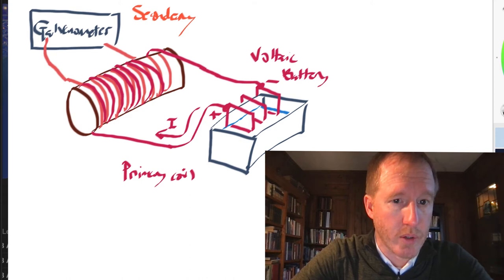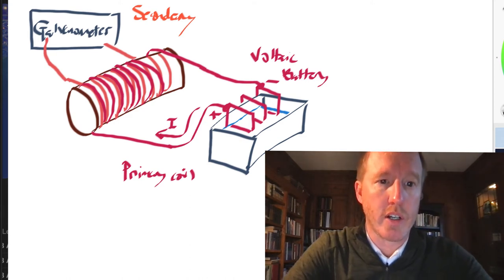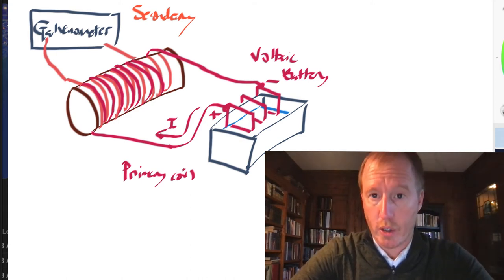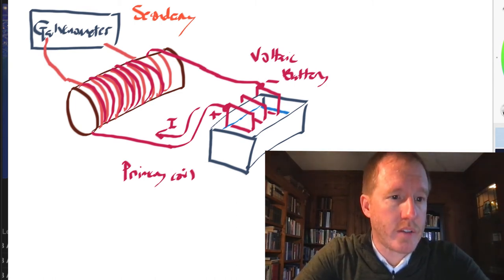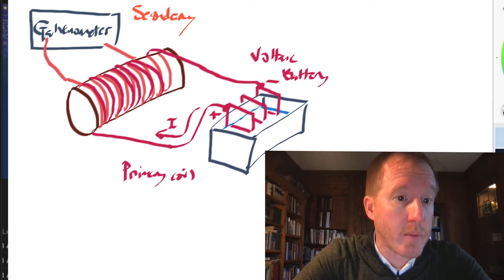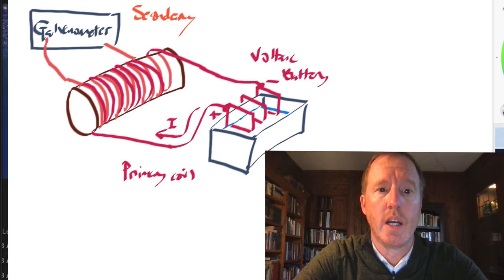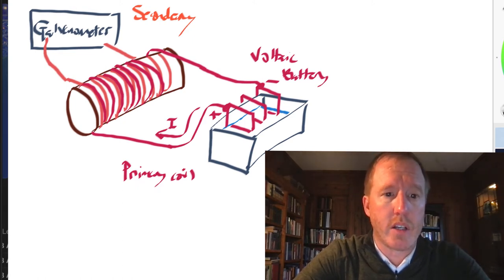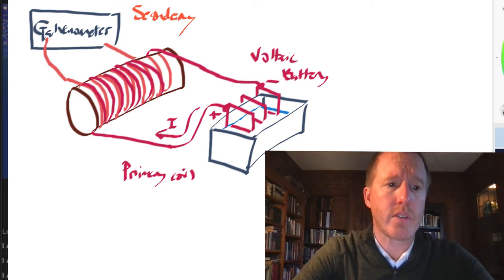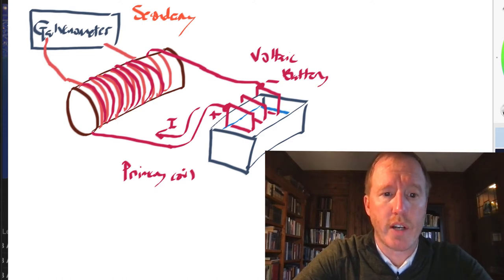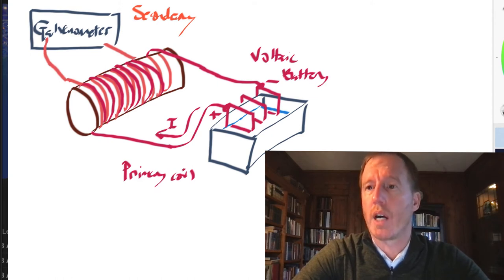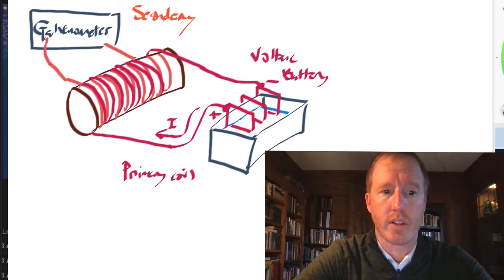He was unable to do so. At the end he says, yet not the slightest sensible deflection of the galvanometer needle could be observed. So he failed. Then he constructed a similar compound helix with six lengths of copper and six of soft iron wire. No effect on the secondary coil could be perceived at the galvanometer. In these and many similar experiments, no difference in action appeared between iron and other metals. He was not able to detect any current in the secondary coil.